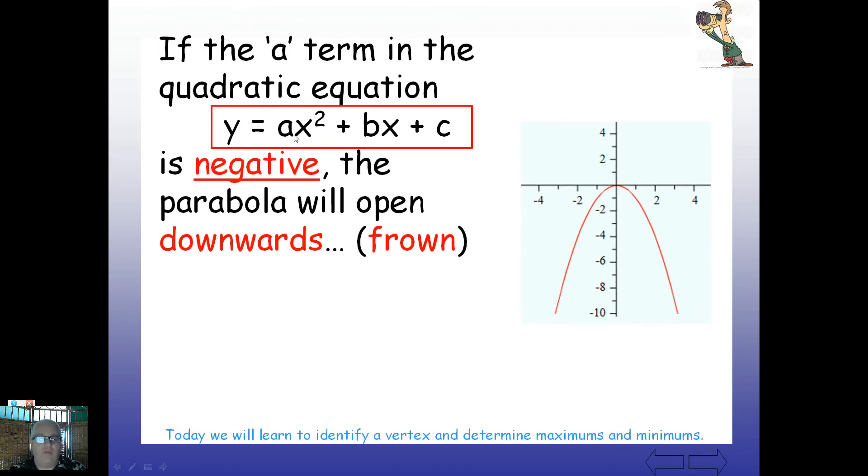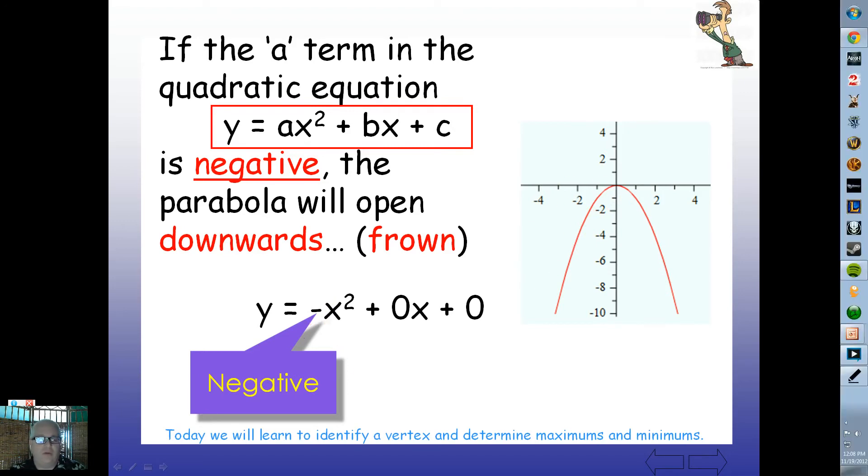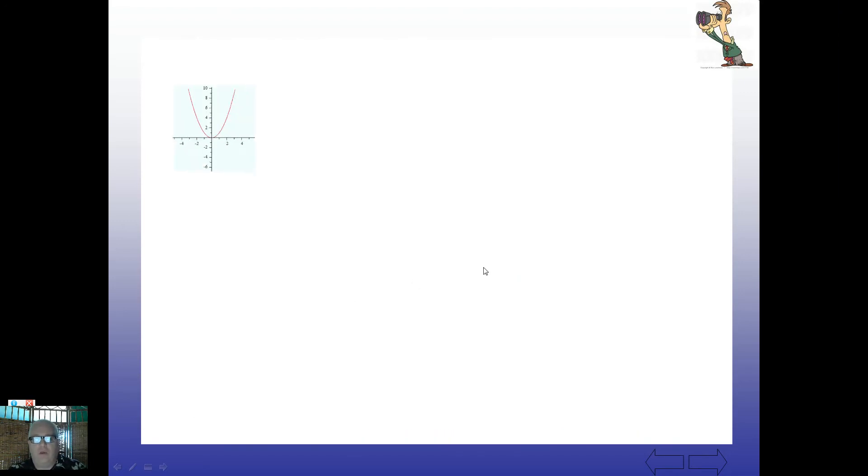What about a negative value? Well, in mathematics here, if this a is negative, then we're looking at a negative. We're going to get an image that opens downward. And we can kind of easily see that as a frowny face maybe. This value here is negative, so we get this downward image like this.